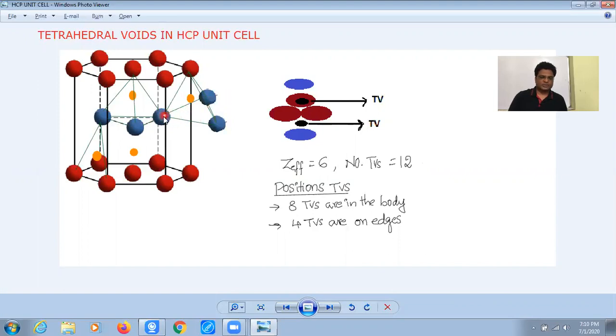Similarly, we can get one more at this position with these three atoms and this corner. So this way, on the edges, each edge will carry two tetrahedral voids.